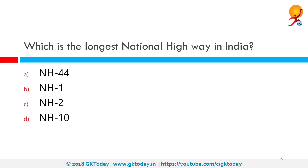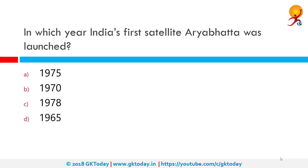Which is the longest national highway in India? Previously known as NH 07, NH 44 is the longest highway in India. It starts from Srinagar and ends at Kanyakumari, with a total length of 3745 km. So the correct answer is A: NH 44.